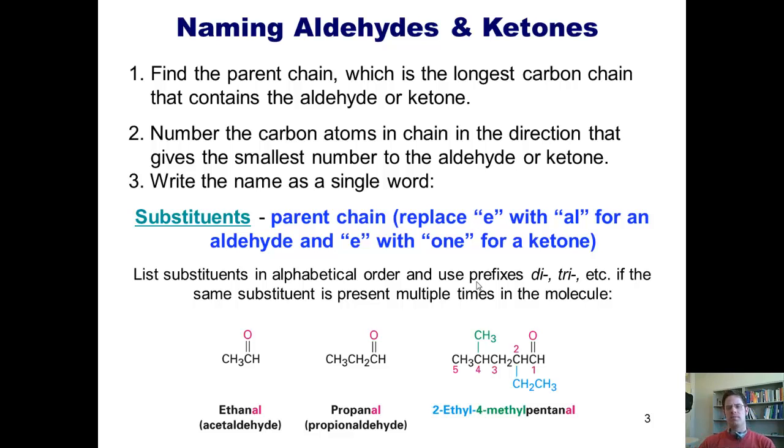First of all, to systematically name an aldehyde or a ketone, you have to find the parent chain, which is the longest carbon chain that contains the aldehyde or ketone. Then you number the carbon atoms in the chain in the direction that gives the smallest number to the aldehyde or ketone carbon. Then we write the full name as a single word.